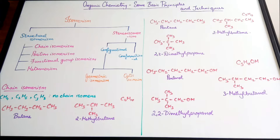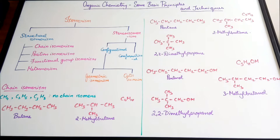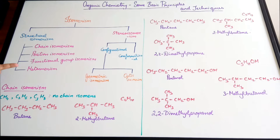Structural isomers have the same molecular formula, but they vary in terms of the arrangement of atoms in the molecule. Based on that variation in arrangement, we have four types of structural isomers: chain isomerism, position isomerism, functional group isomerism, and metamerism.